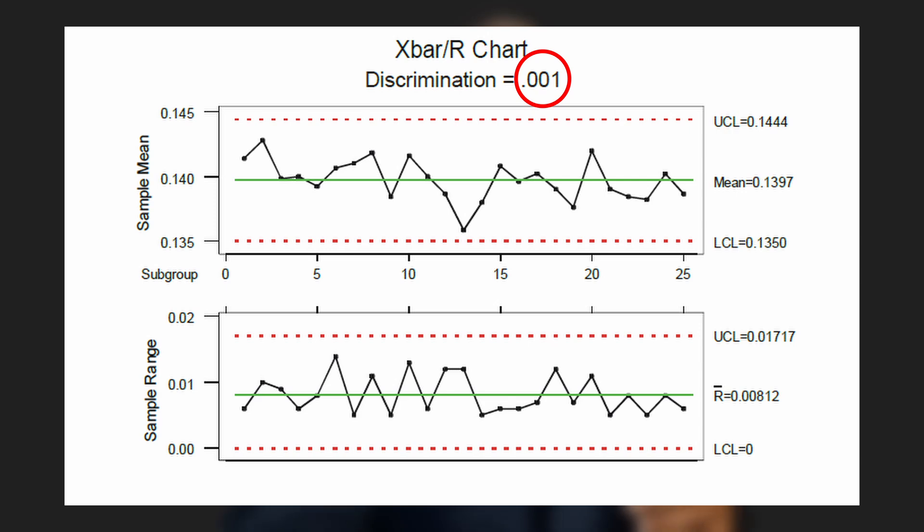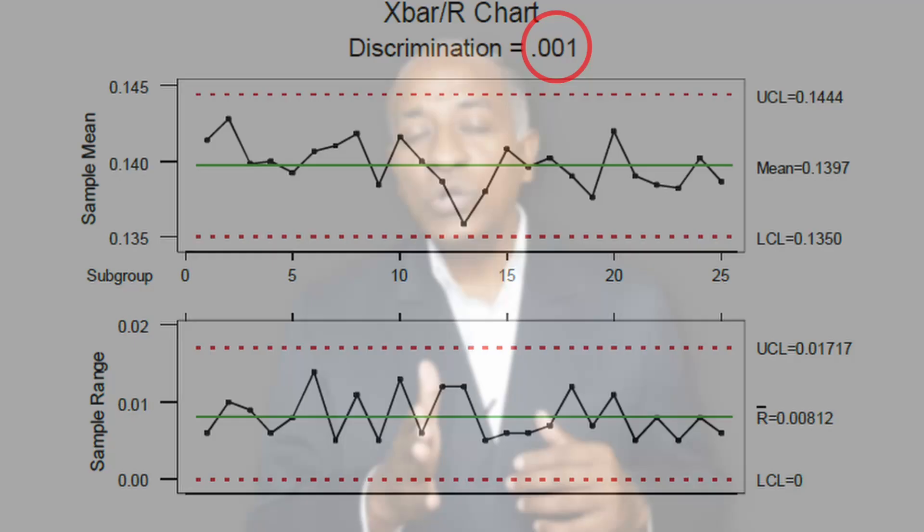The reason all points are now within control is simple — the instrument now has the capability to detect that error. If an instrument cannot find the variation which is in the process, it can result in either a Type 1 or Type 2 error: a good part may be rejected, or a rejected part may be considered good.